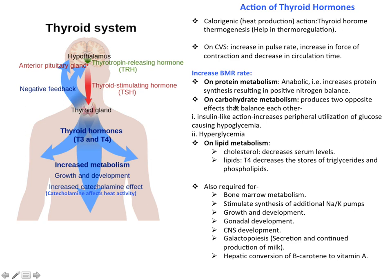In carbohydrate metabolism, thyroid hormones produce two opposite effects that balance each other. They can induce insulin-like action, increasing peripheral utilization of glucose and causing hypoglycemia, thereby balancing glucose levels in the body. The thyroid hormones also work on lipid metabolism — they can decrease the cholesterol level in the serum, and T4 decreases the store of triglyceride and phospholipids. Thus they help maintain the basal metabolic rate.